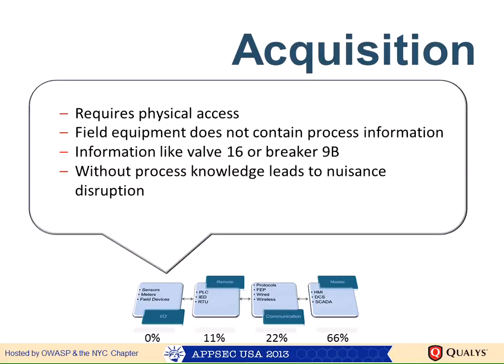Data acquisition components require physical access, and there were virtually no vulnerabilities because field equipment contains no process information — at most you'd get something like 'breaker 16 is on' or 'valve 16 is open.' There is no TCP/IP, no network at all, so you must be physically present to interact with a photo sensor.